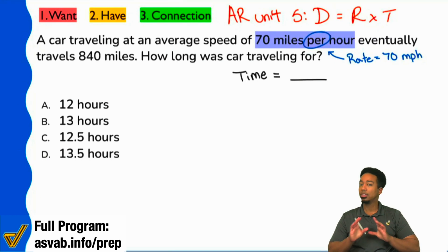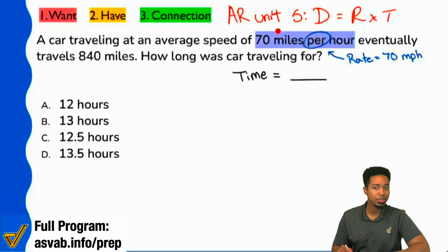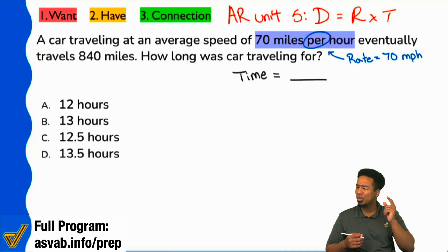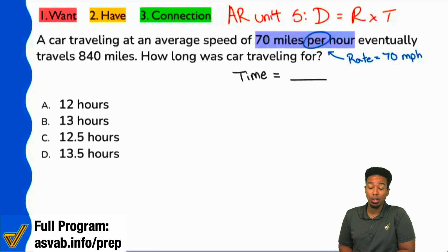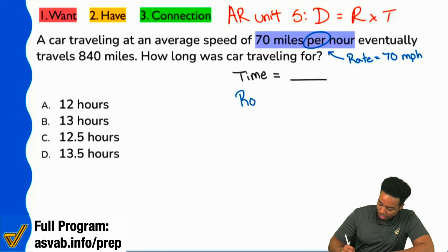Do we see that? The answer choices are all time. We are looking for time. Keep things simple. Don't overcomplicate them unless there's more information to handle. Next up. Let's read through the information. Let's see what pieces we have. A car traveling at an average speed of 70 miles per hour eventually travels 840 miles. We see here the average speed was 70 miles per hour. And we already said earlier that that is a rate. But pop quiz time, what is it that gives it away again? How do we know that that's a rate again? That's right. The word per.